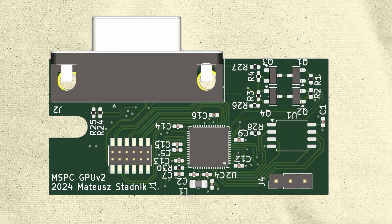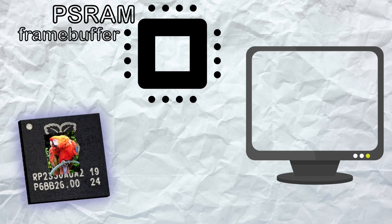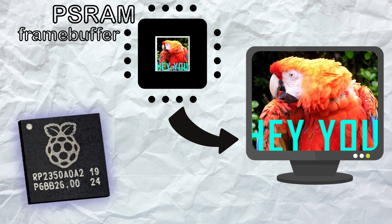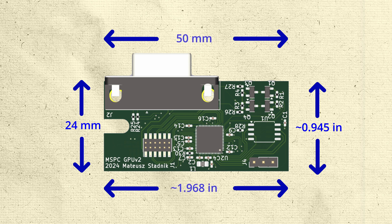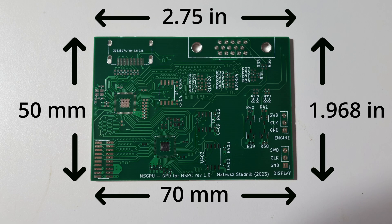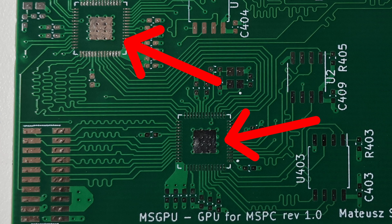Let's start with the VGA card. Additionally, RP2350 supports external PS RAM with memory mapping. This feature is useful for frame buffer implementation. I have to fit the whole board on a really small PCB — 24 by 50 mm. That's much smaller than for MSPC version 1. However, using RP2350, I can use only a single MCU instead of two of them, significantly reducing the required space.